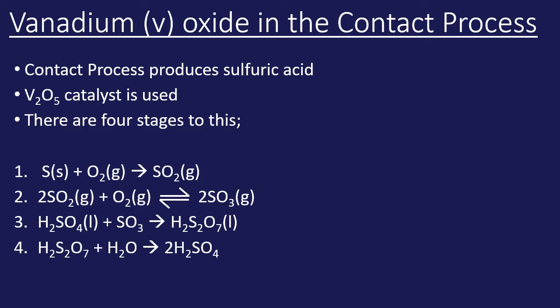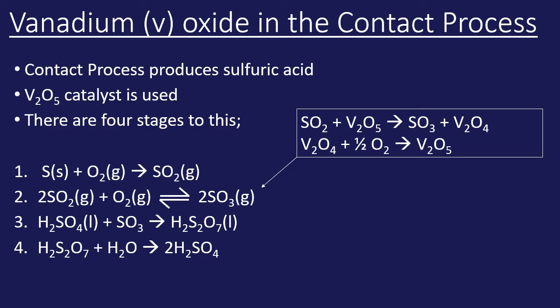Water is then added at this stage to produce sulfuric acid. The key step in this process is the second step because it's reversible, and this is where the catalyst comes in. What you can see here is that the sulfur dioxide is reacting with the catalyst. The catalyst is changing from V₂O₅ to V₂O₄, but then notice how the catalyst is regenerated back to V₂O₅. So the catalyst is changing, but then it's changing back — it remains unchanged. This is an example of a catalyst being involved in the reaction but coming out unchanged in the end.